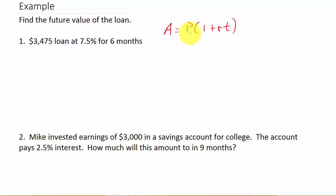So let's identify P, R, and T. So P is equal to the $3,475, R is your interest rate, R, that's the 7.5% interest, and when we write it, we'll convert it to a decimal by moving it two places to the left.